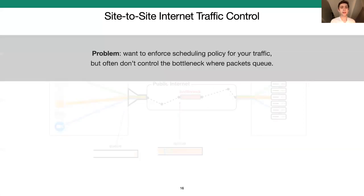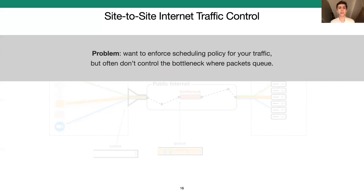Let's take a step back and summarize the problem. You have a bunch of traffic going between your site and another site, and you'd like to enforce some policy about how that traffic should share the limited network resources. But no one in the middle of the network can implement that policy for you — it really makes the most sense for you to implement it yourself, since you know your own traffic best. But when the bottleneck is outside your network, you don't have a queue to schedule. So what can you do?